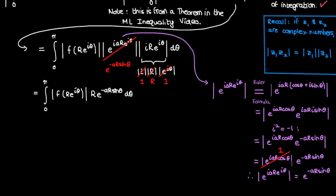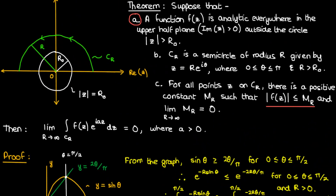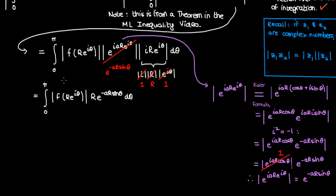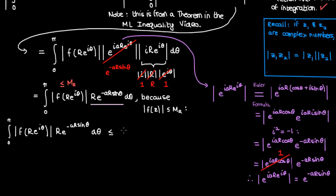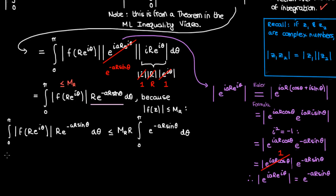Now what about the magnitude of f? From the assumptions of our proof, M sub capital R is the upper limit of f(R·e^(iθ)), which equals f(z) under the polar representation. So we can say that |f| is less than or equal to M sub R. We can't substitute this directly into the integral as an equality, but because f is bounded by M_R, the integral involving f multiplied by positive numbers is therefore less than or equal to the integral of M_R multiplied by those same positive numbers. Since M_R and R are constants, we can take them outside the integral.